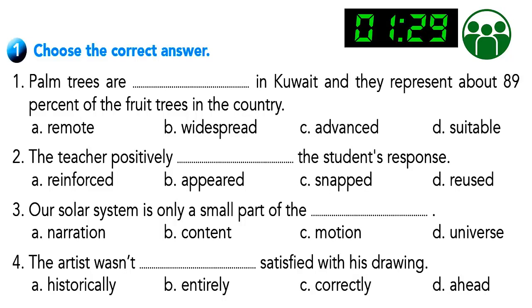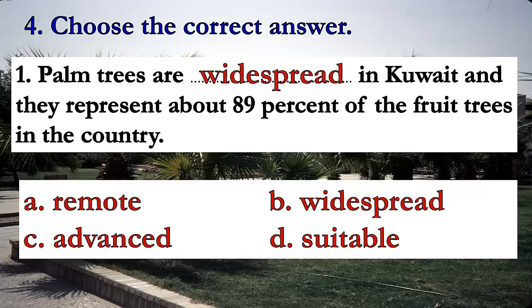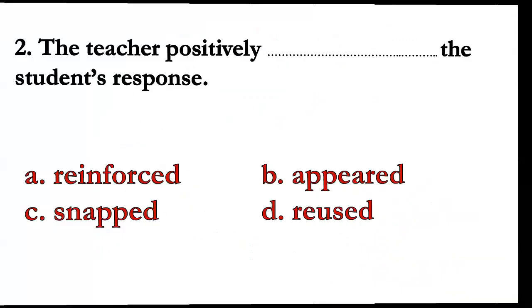Let's start with the first exercise. Think about these questions and find suitable answers. Number one: palm trees are _____ in Kuwait and they represent about 89% of the fruit trees in the country. The answer is 'widespread.' Palm trees are widespread in Kuwait and they represent about 89% of the fruit trees in the country.